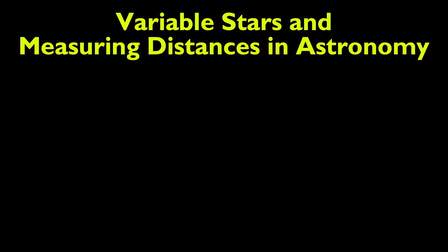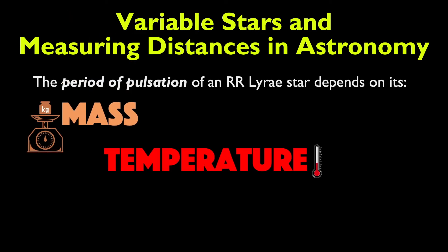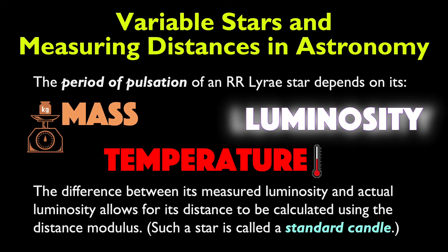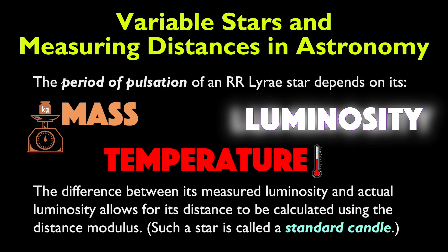Now, here's the cool thing about variable stars. We can actually use them to measure distances in astronomy. You see, the period of pulsation for an RR Lyrae star depends on three things: the star's mass, its temperature, and its luminosity. The difference between its measured luminosity and actual luminosity allows for its distance to be calculated using the distance modulus. Such a star is called a standard candle in astronomy, and we'll learn more about how we use them to actually measure distances later in this unit.